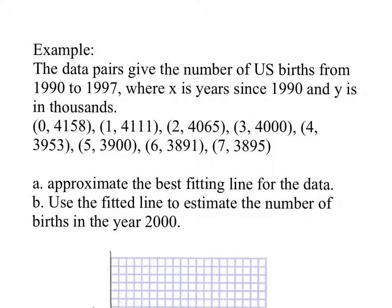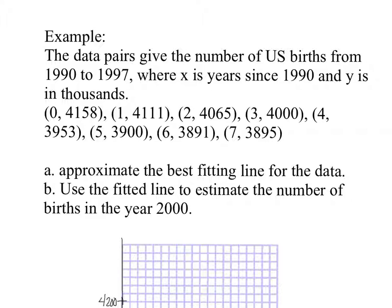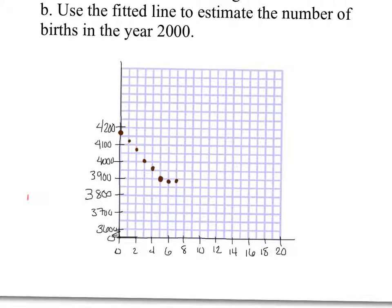So I want to show you an exact problem. So here we have an example. The data pairs give the number of U.S. births from 1990 to 1997, where X is the years since 1990. So if we're talking about 1991, X is 1 then, because it's one year since 1990. And Y is in thousands. So you have 0 and 4,158, 1 and 4,111, 2 and 4,065, and so on. So what I've done is below, below I have made a graph. I've already started it. And let me quick put the points in without recording so you don't have to waste your time. So there are the points.